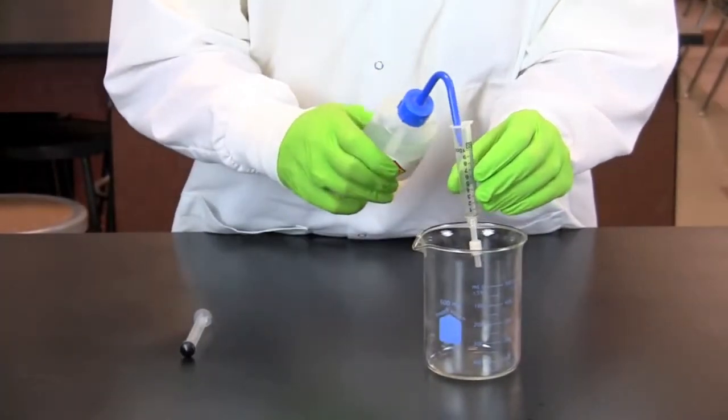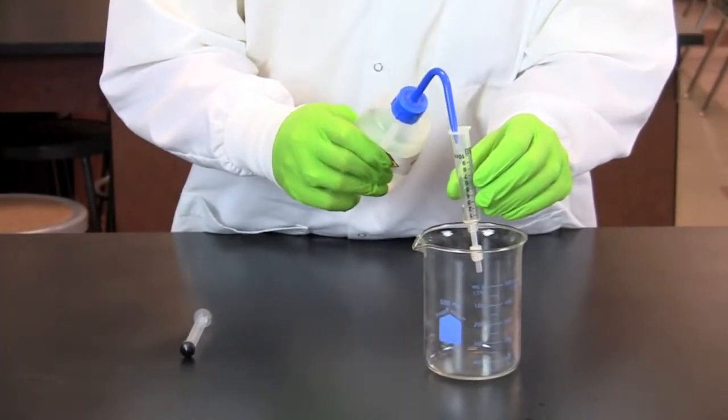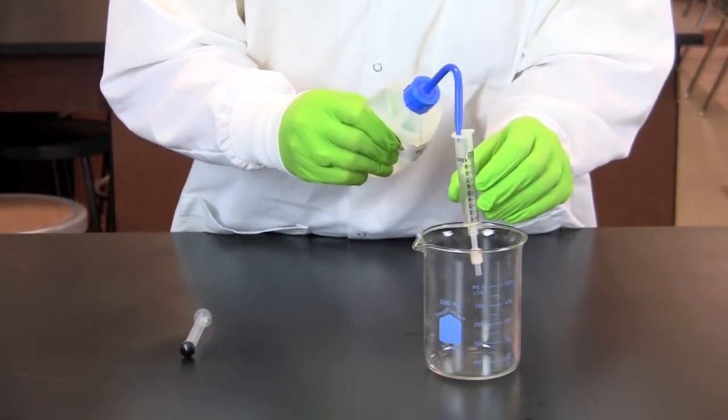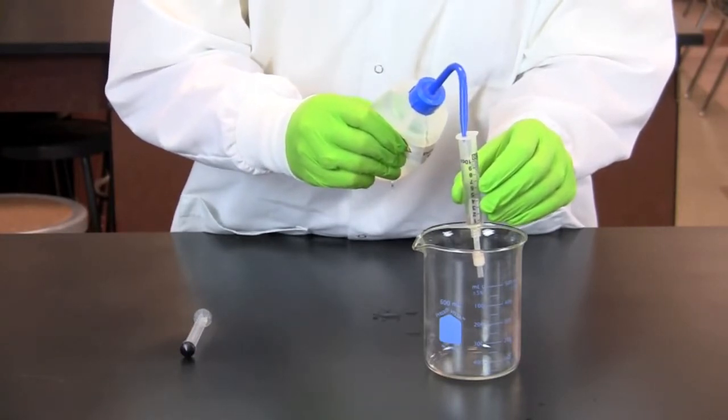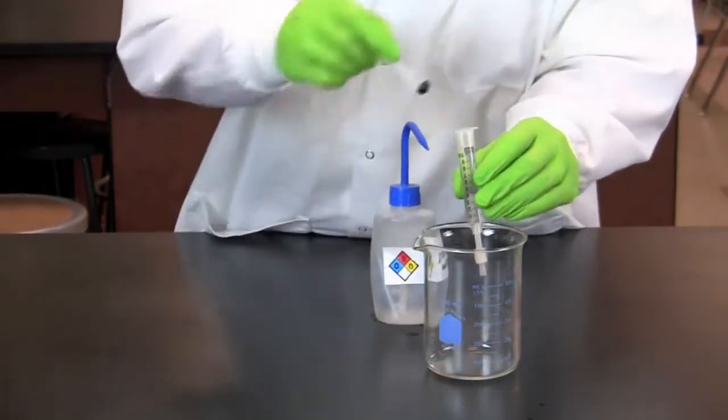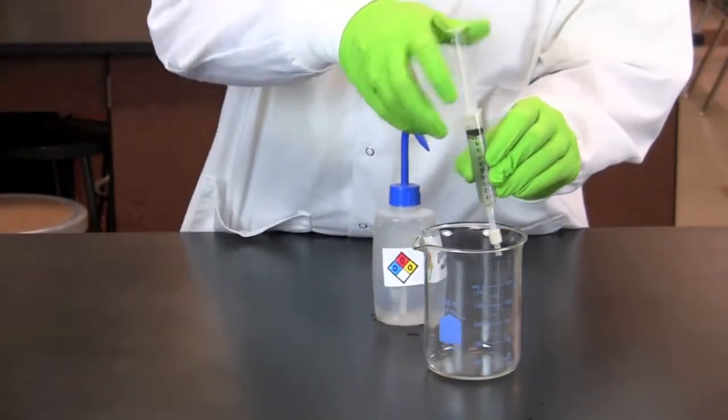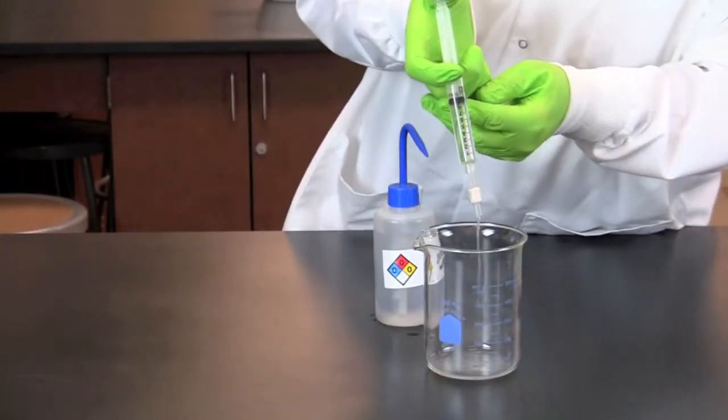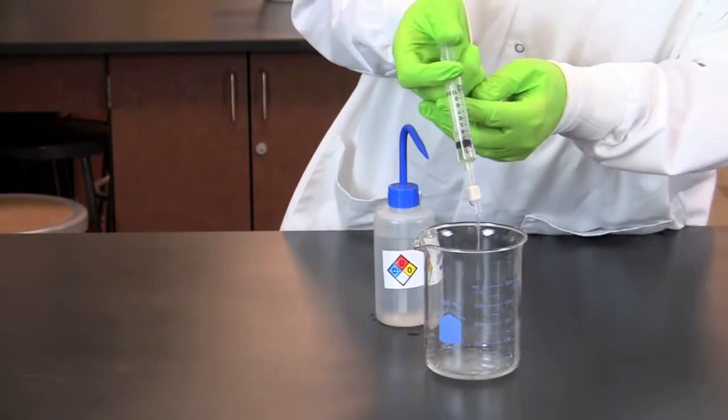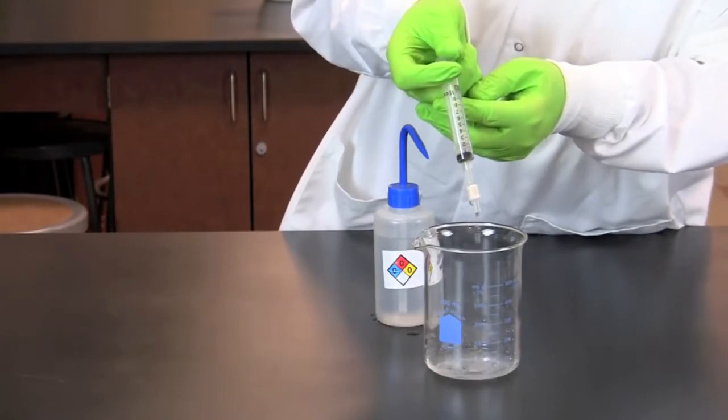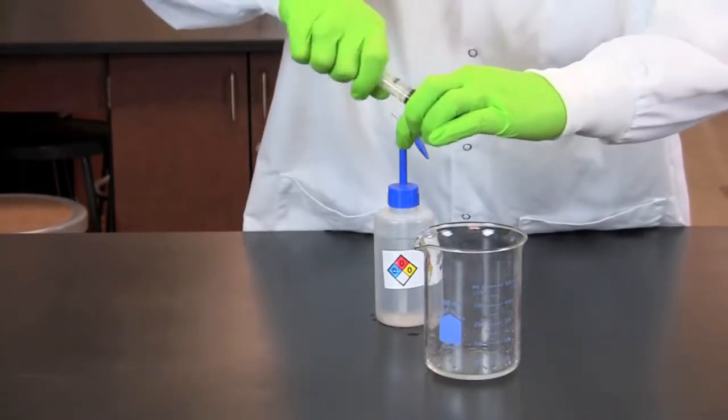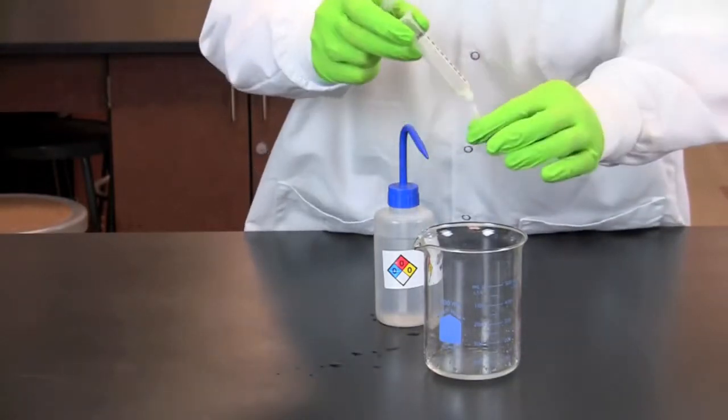Next, fill the syringe with 10 ml of distilled water. Once the water has completely flowed through, pull off the cartridge, pull out the plunger, and reattach the cartridge.